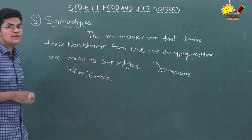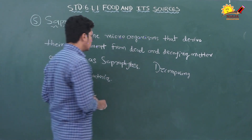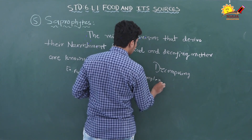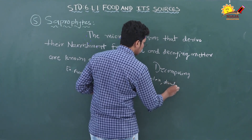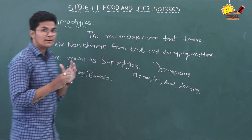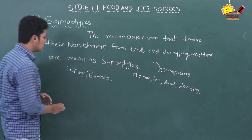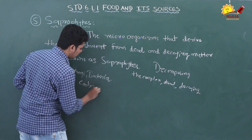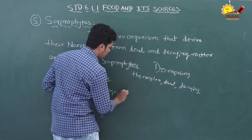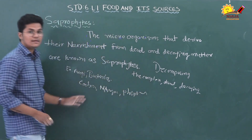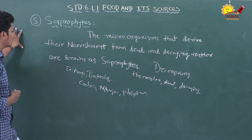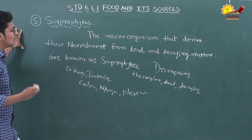While decomposing, saprophytes break down complex dead and decaying matter into nitrogen, phosphorus, and carbon, which are then returned to the environment. So saprophytes are microorganisms that get nourishment from dead and decaying matter.